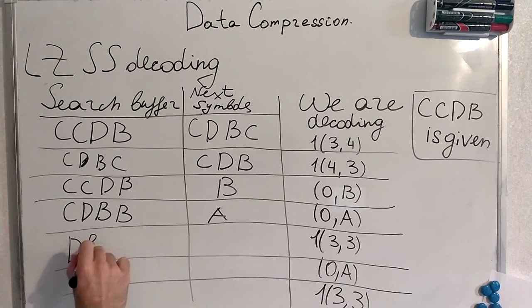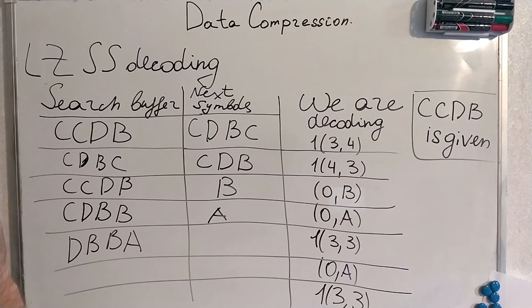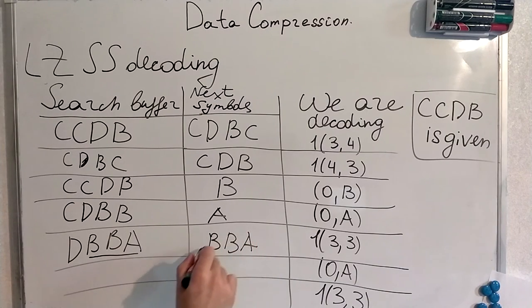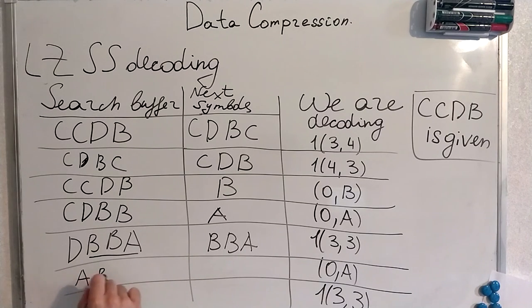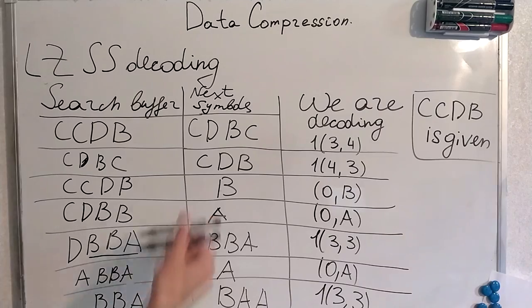DBBA. Then we use this and produce new symbols. Alright, this is this A. No, this is just some A. That's what we have decoded.